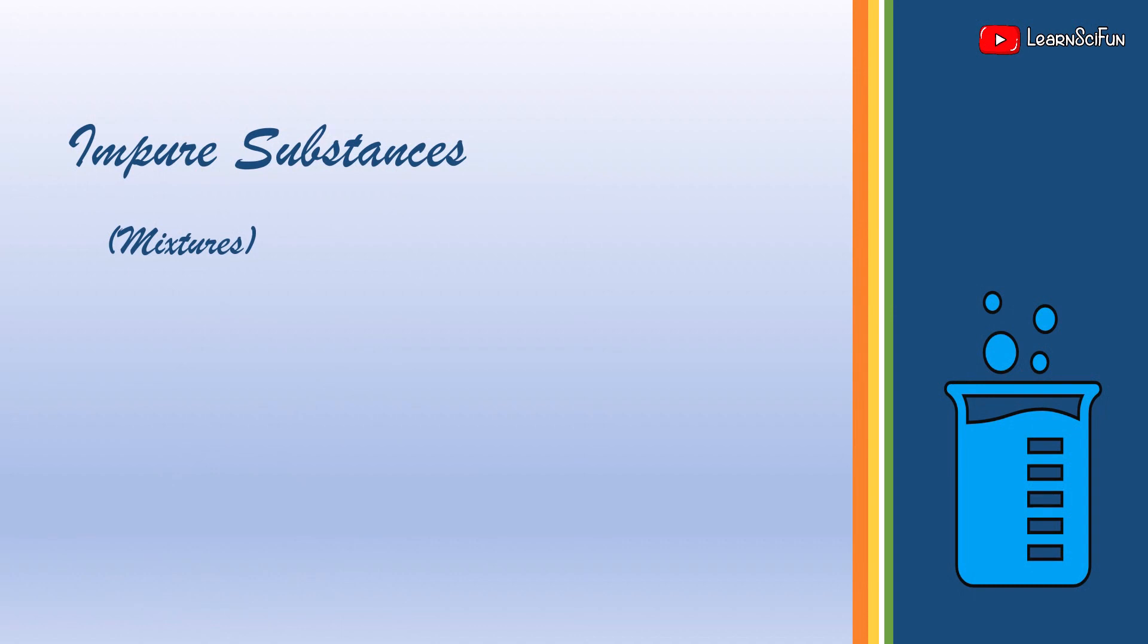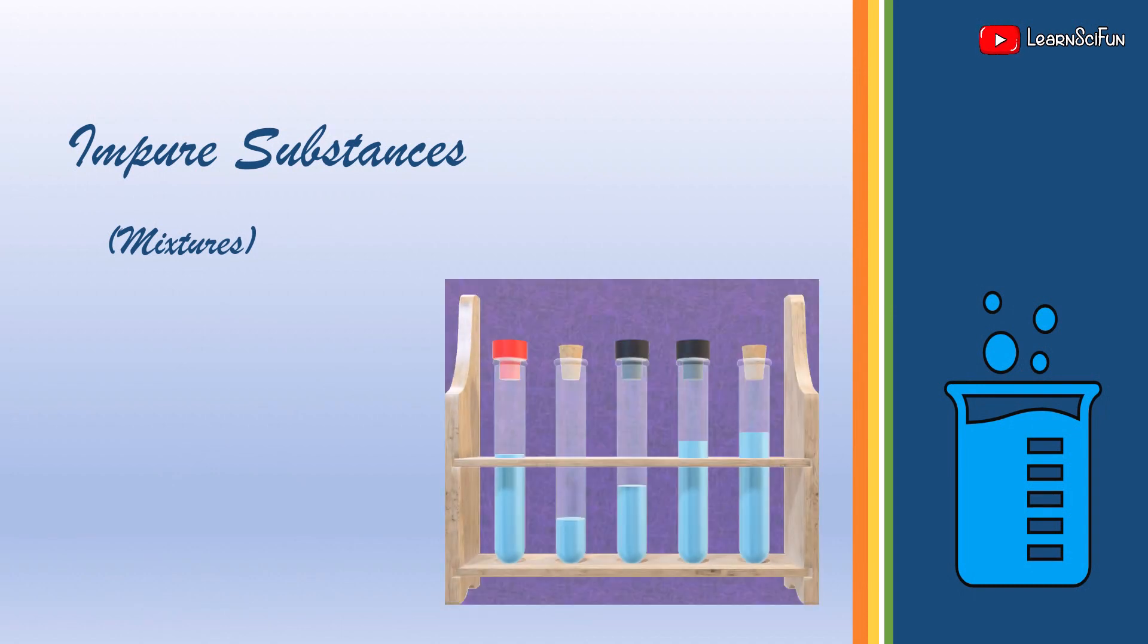Impure substances are made up of two or more pure substances mixed together in any ratio. They retain the properties of constituent substances and their composition is not uniform. They do not have any definite set of properties. They may be homogeneous or heterogeneous mixtures.